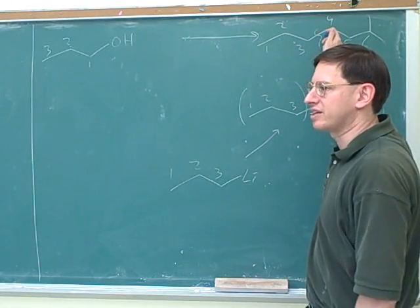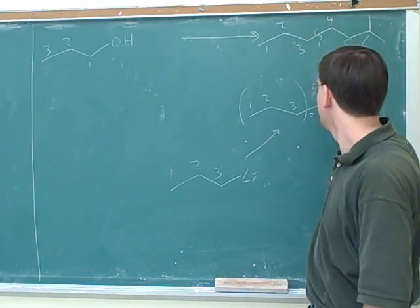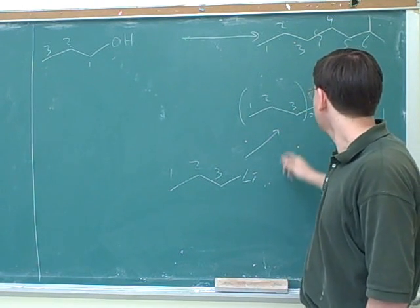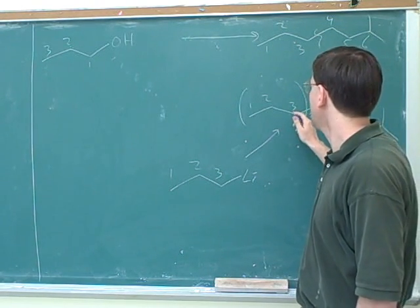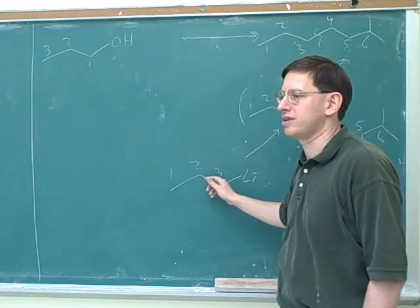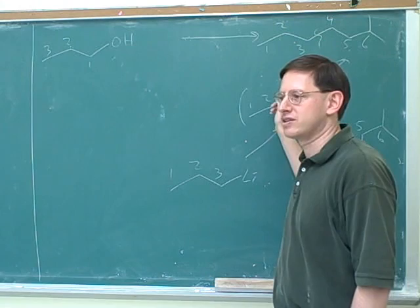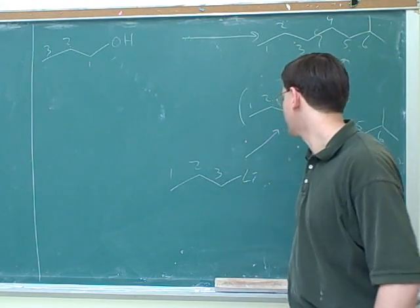Remember, we're trying to work backwards from the product and ask, how did we make this? Well, we probably made this out of this organocuprate. And how did we make the organocuprate? We know we made the organocuprate out of an alkyl lithium. Because that's the only way we know to make an organocuprate. So we know that this must have been the starting material for that.